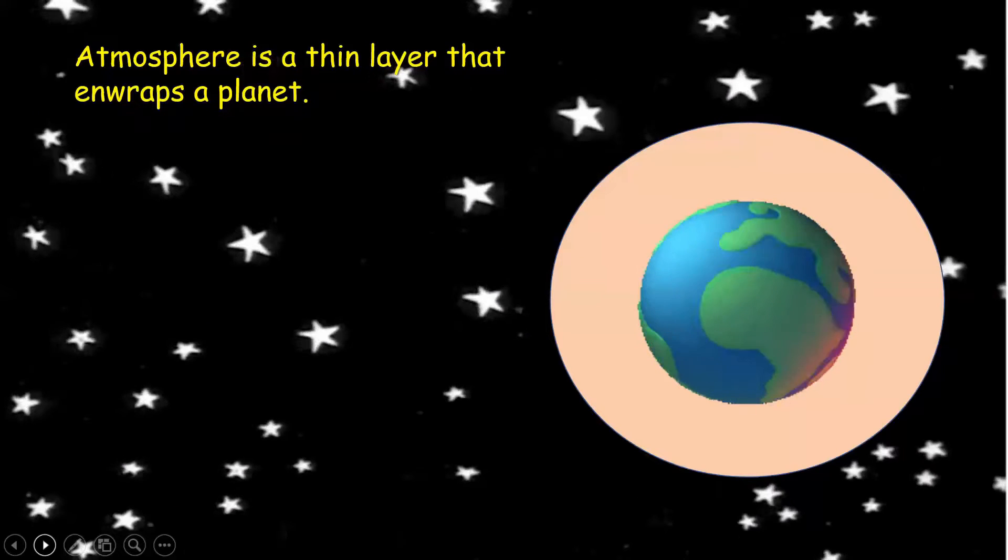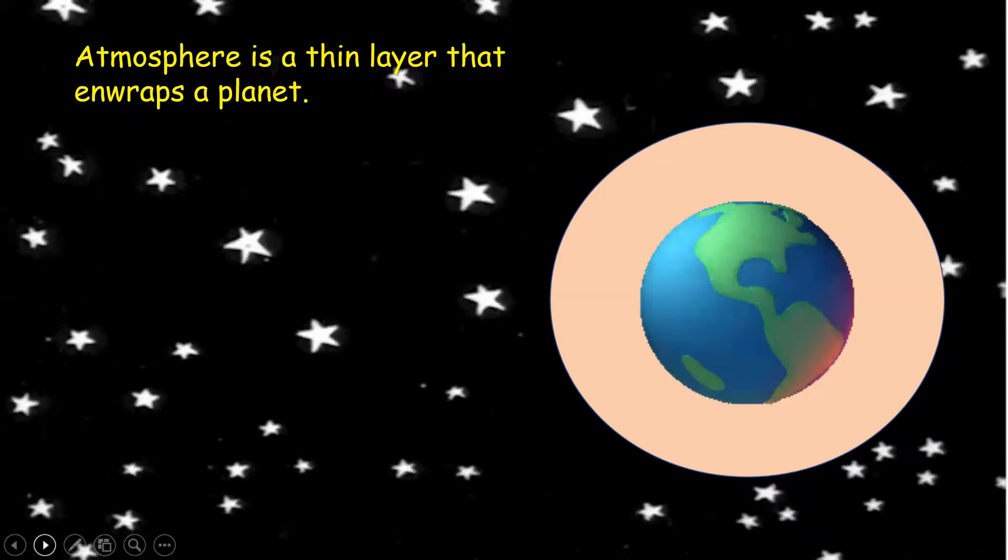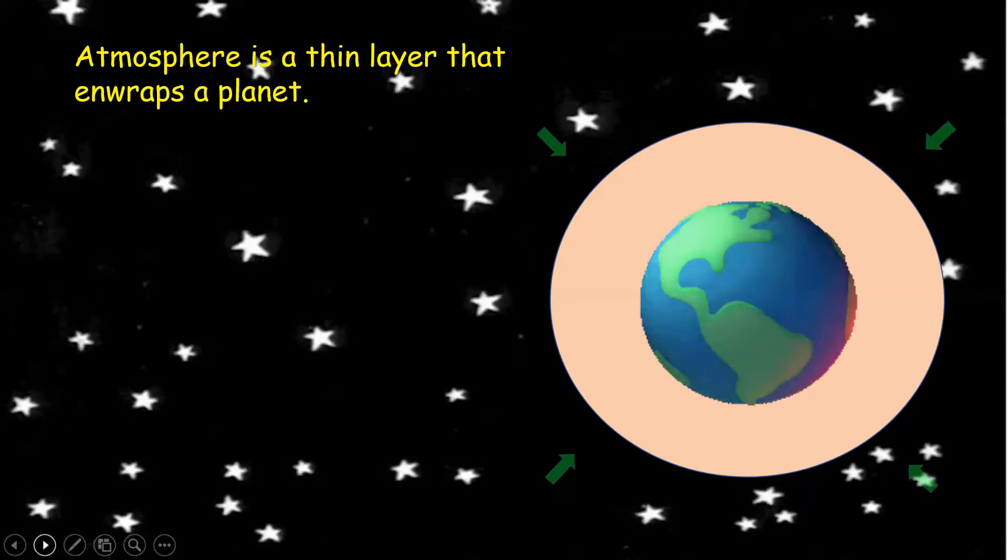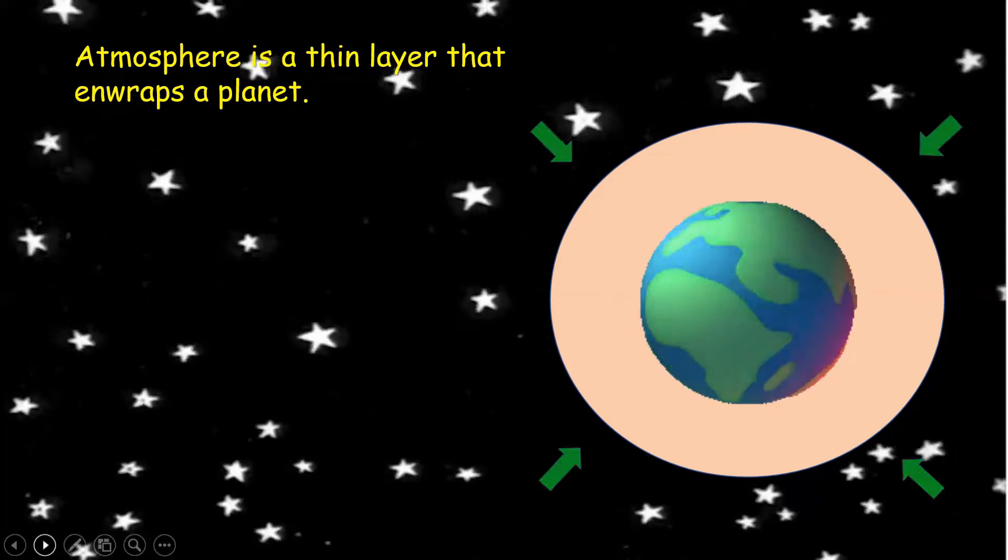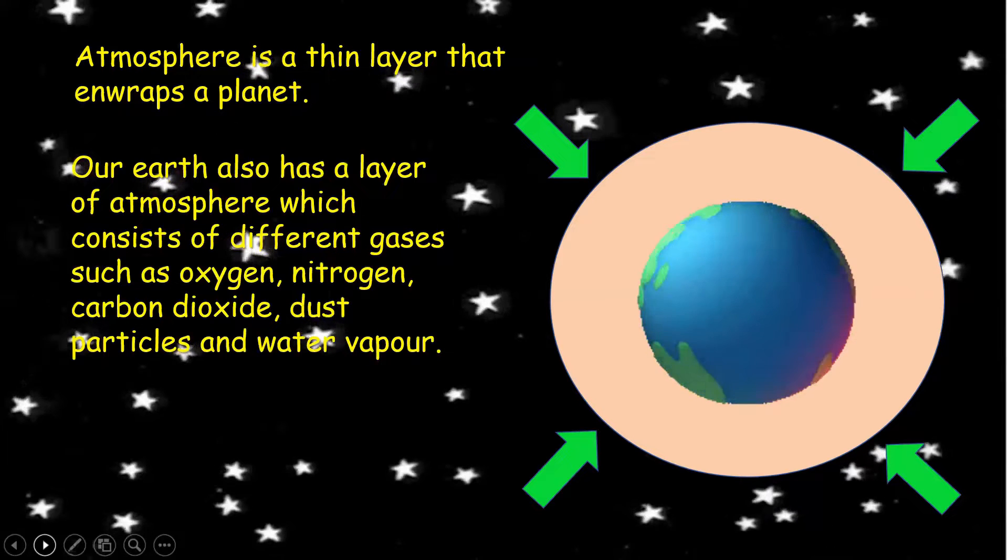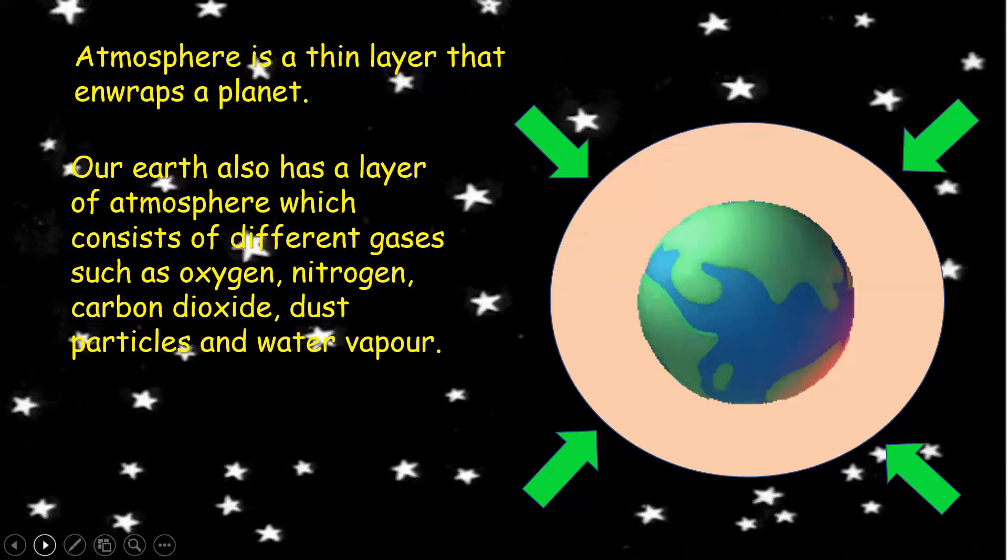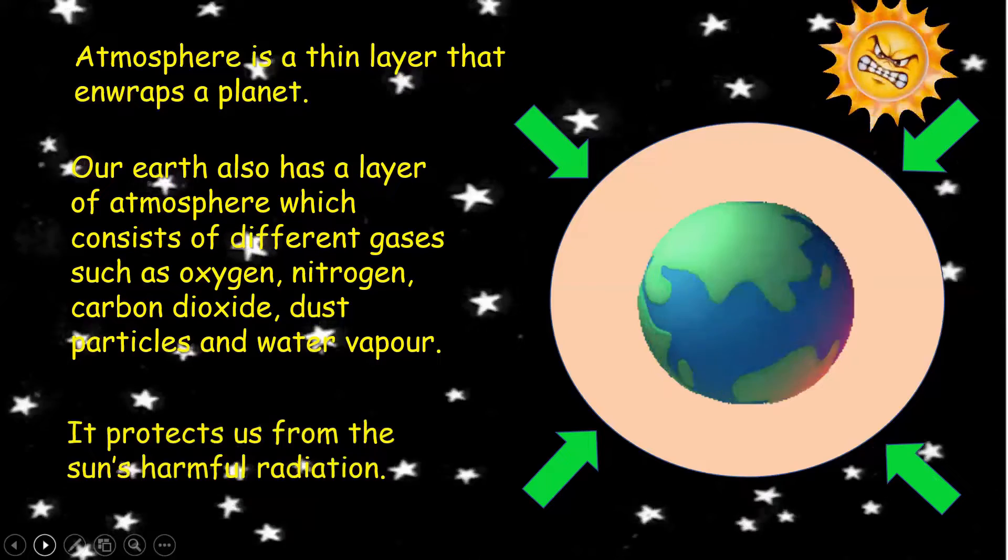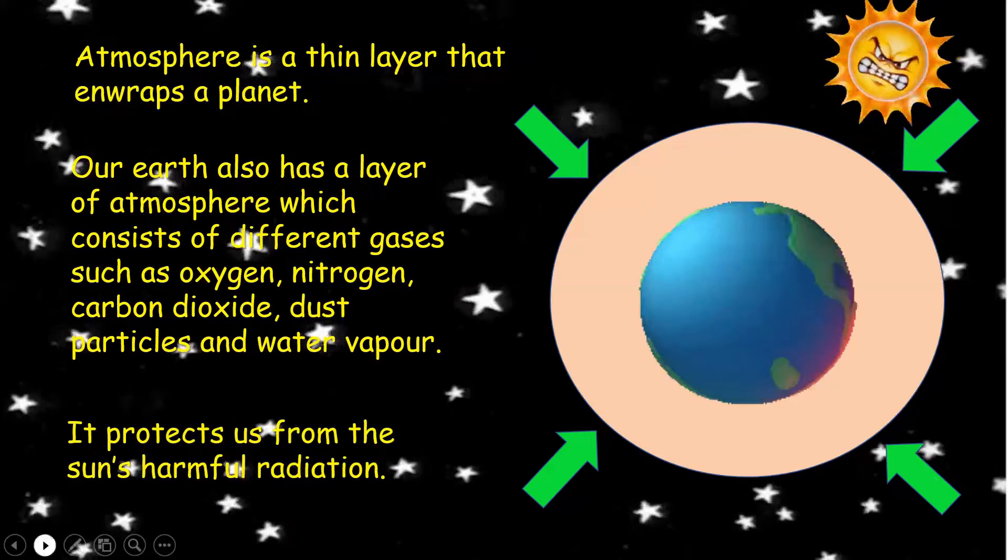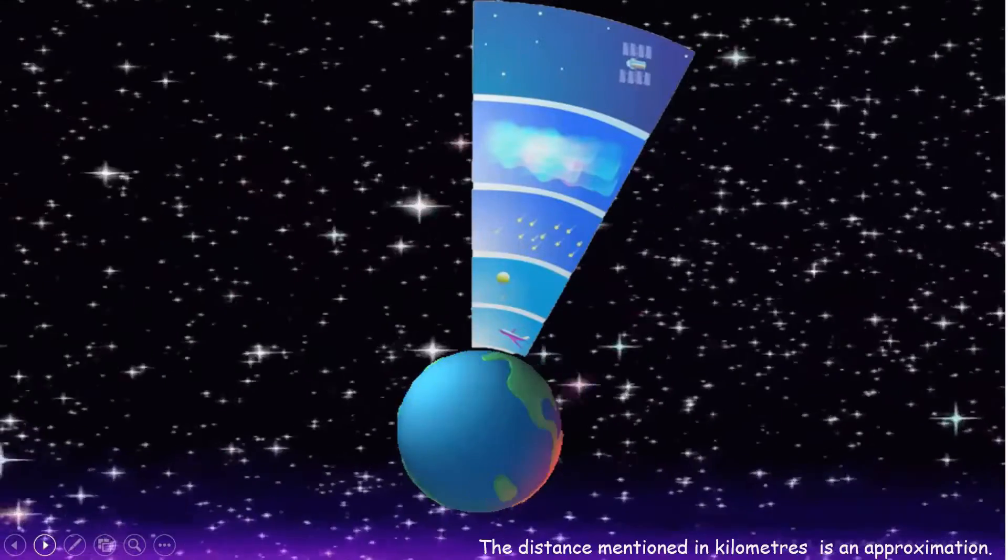Before we come to know what needs to make a person be called as an astronaut, let us understand what is atmosphere. Atmosphere is a thin layer that engraves a planet. Our earth also has a layer of atmosphere which consists of different gases such as oxygen, nitrogen, carbon dioxide, dust particles and water vapor. It protects us from the sun's harmful radiation.